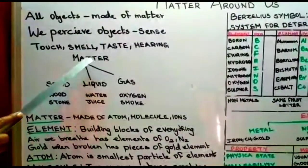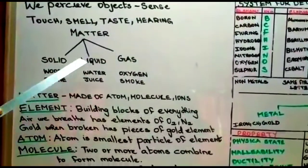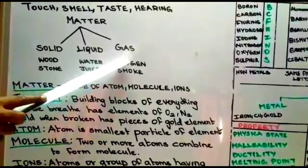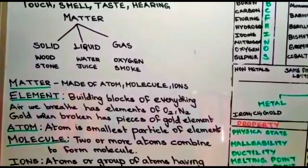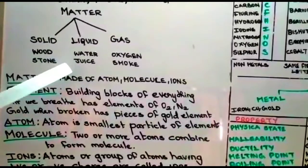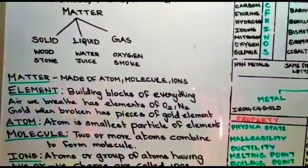This matter can be divided into three different types: solid, liquid, or gas. For solid, we can take examples like wood or stone. For liquid: water or juice. For gas: oxygen, nitrogen, carbon dioxide.